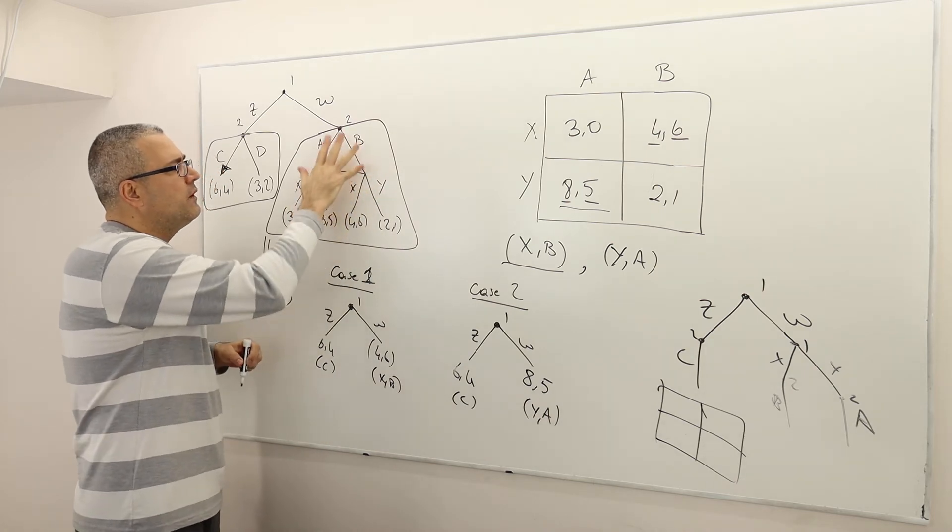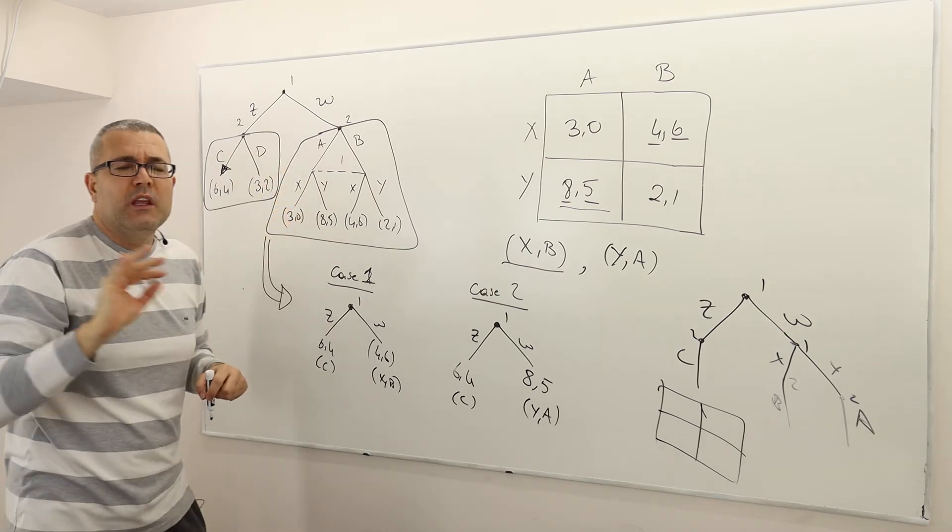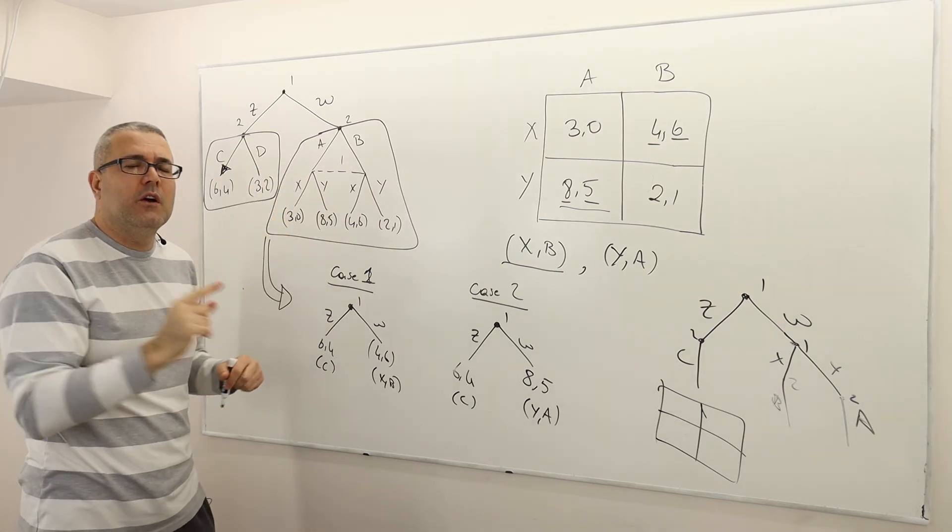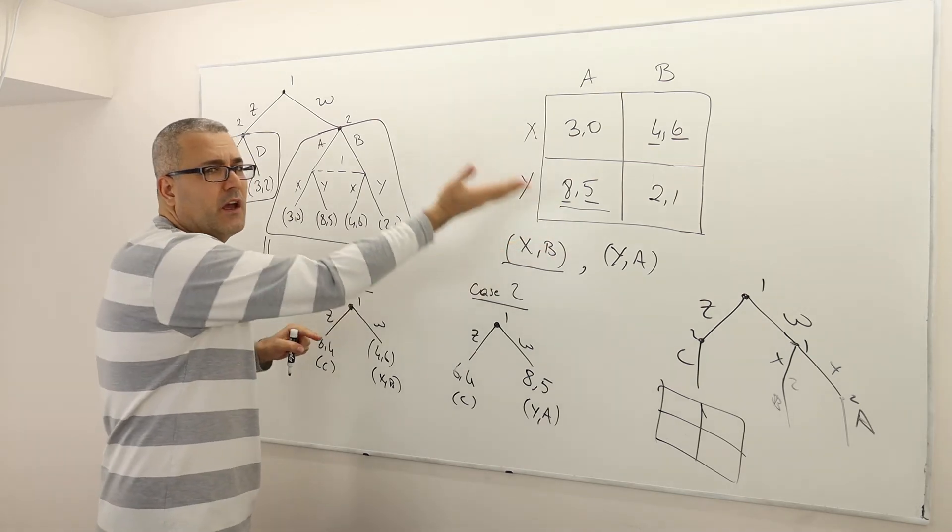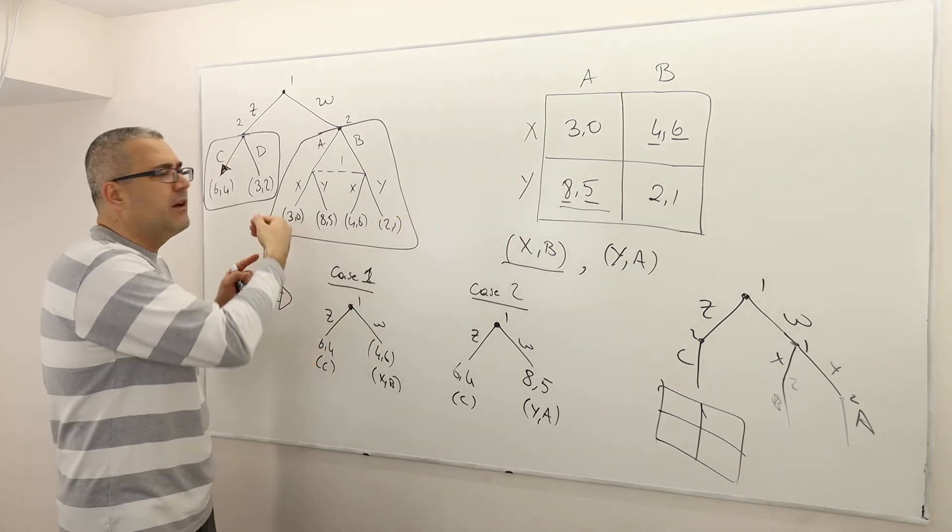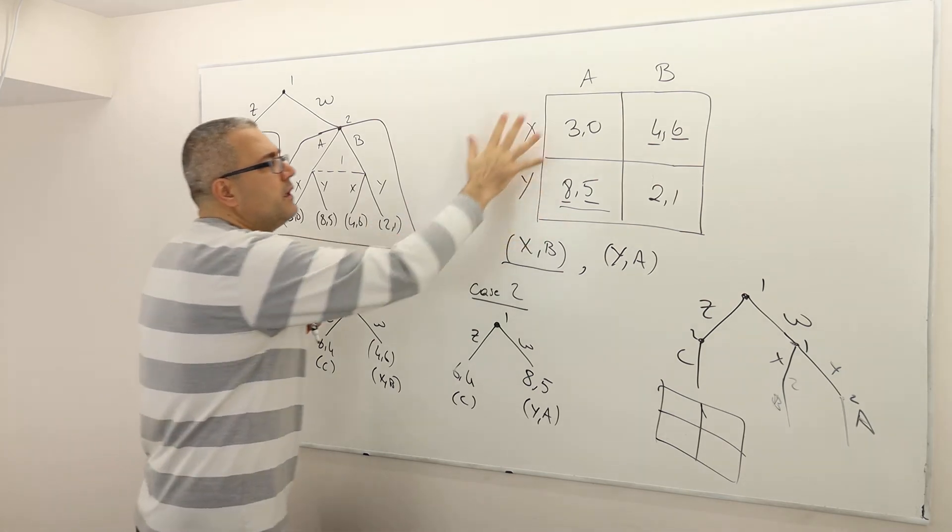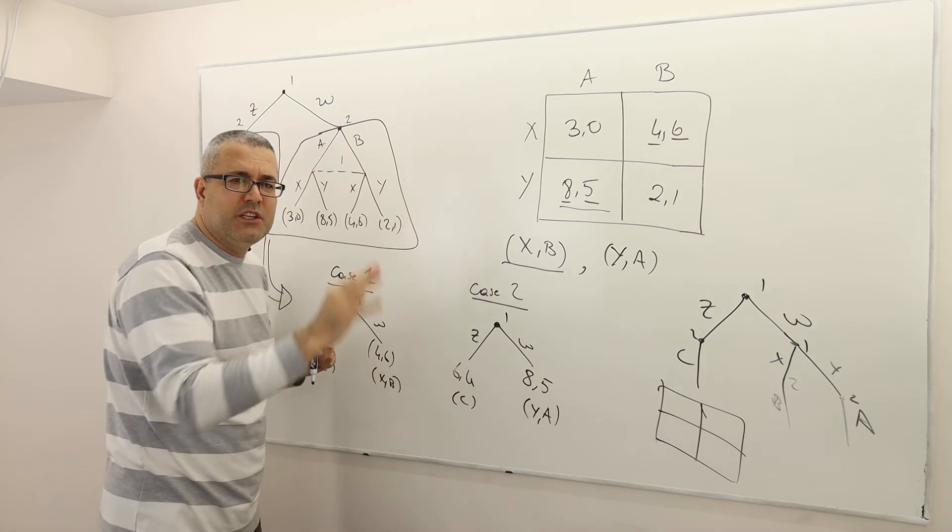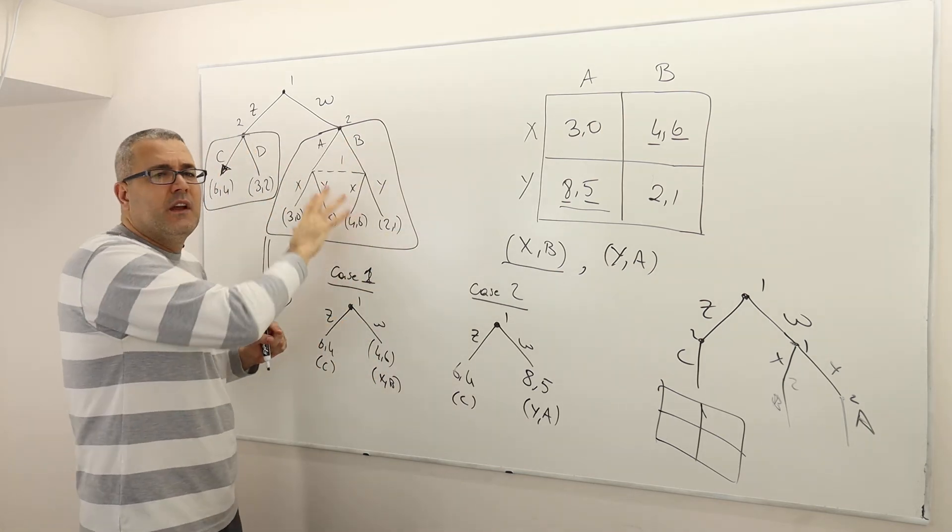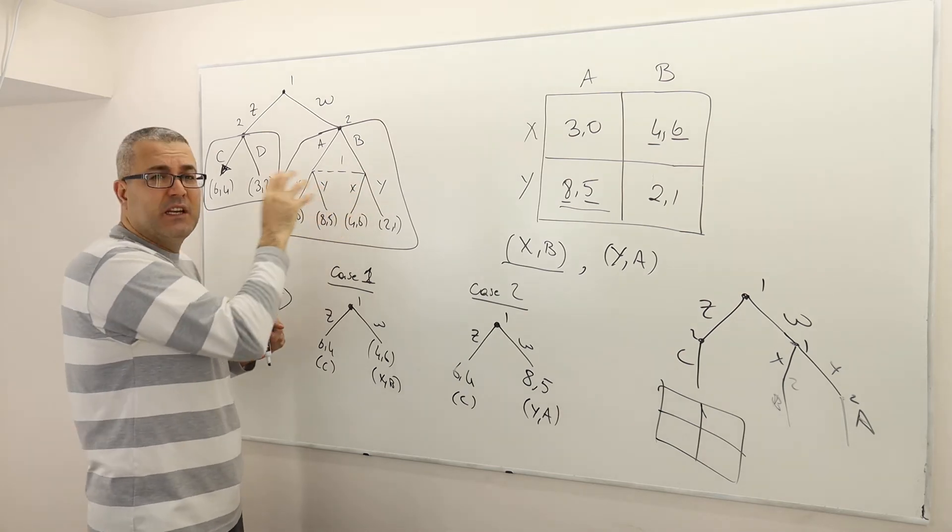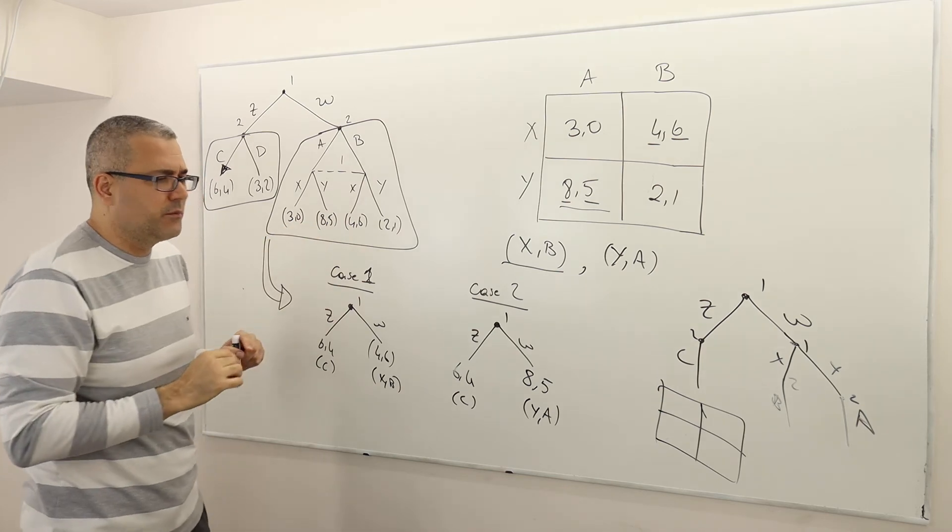Once you solve the Nash equilibrium of this subgame, there is no more imperfect information in this game. So whenever there is no imperfect information, you shouldn't write a normal form representation. You should apply backward induction. Alright? You use this normal form representation and solve the Nash equilibrium only if there is an imperfect information, meaning there is an information set. And so one player cannot observe the other player.